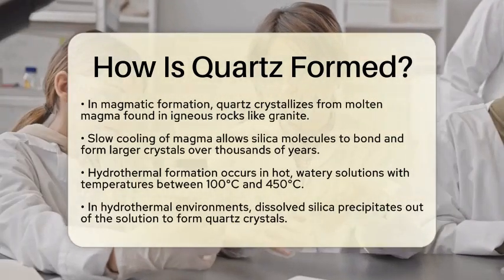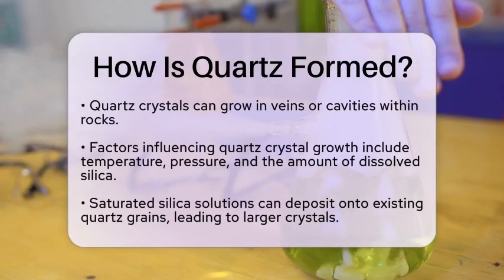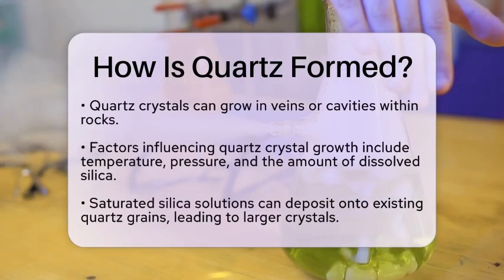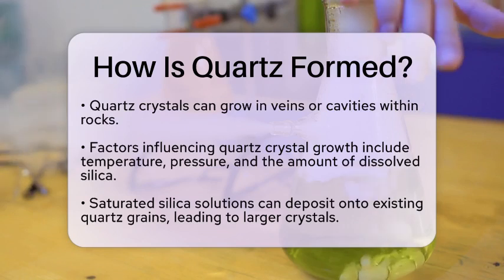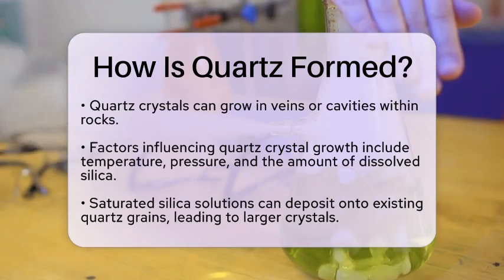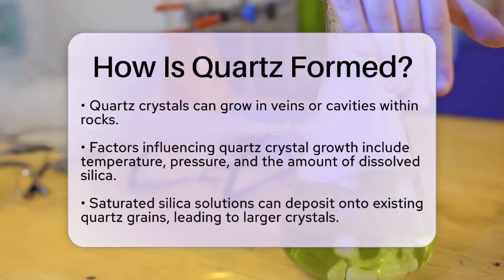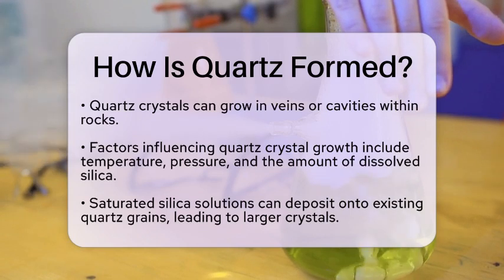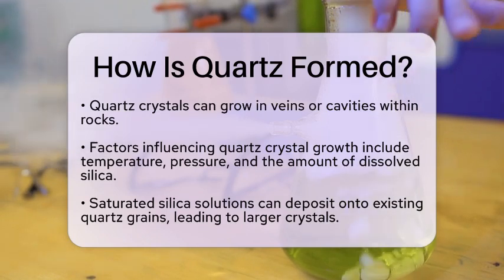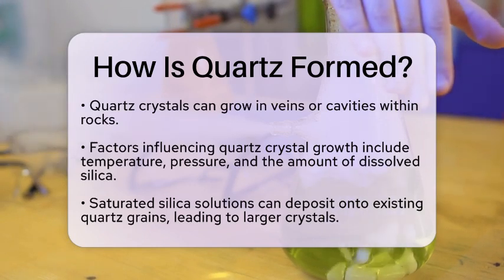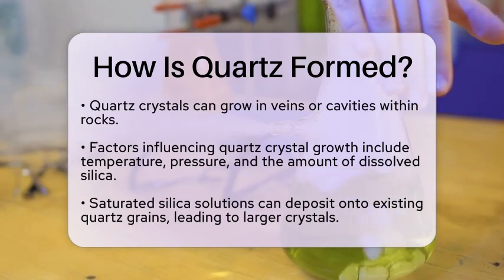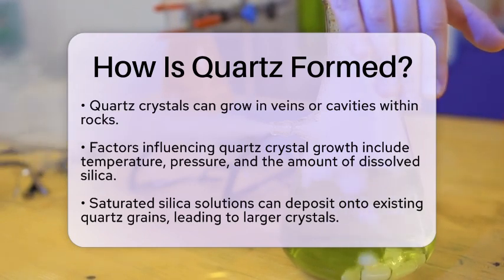The growth of quartz crystals is influenced by several factors, including temperature, pressure, and the amount of dissolved silica available. In hydrothermal environments, if the solution becomes saturated with silica, it can deposit onto existing quartz grains, leading to larger crystals. If there are no existing crystals, new ones can form, but this requires a gradual decrease in temperature and pressure to allow stable growth.